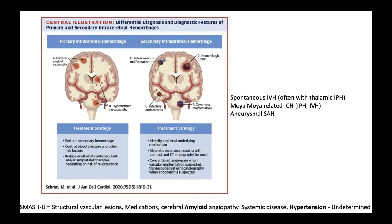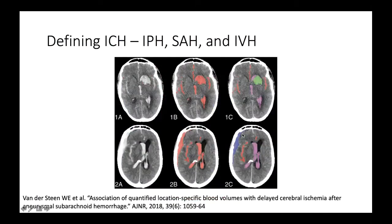Looking at the schematic, you can see examples of the two more common major causes of primary ICH. Cerebral amyloid angiopathy is more commonly lobar and distantly located, versus hypertensive ICH, which occurs in characteristic deep structures — the pons, cerebellum, basal ganglia, and thalamus. Secondary ICH examples include hemorrhagic tumor or an AVM. Moya Moya, a steno-occlusive progressive condition, can also present with ICH or IVH.